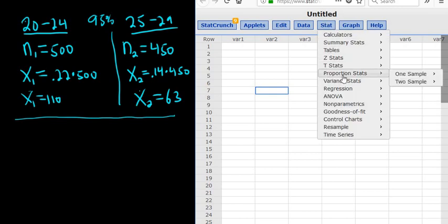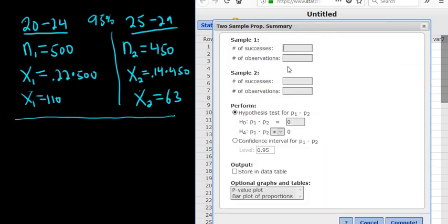So Stat, Proportion Stats. It's two-sample because we have two samples, and it's always with summary for these types of problems. For these confidence interval problems for proportions we typically use with summary.